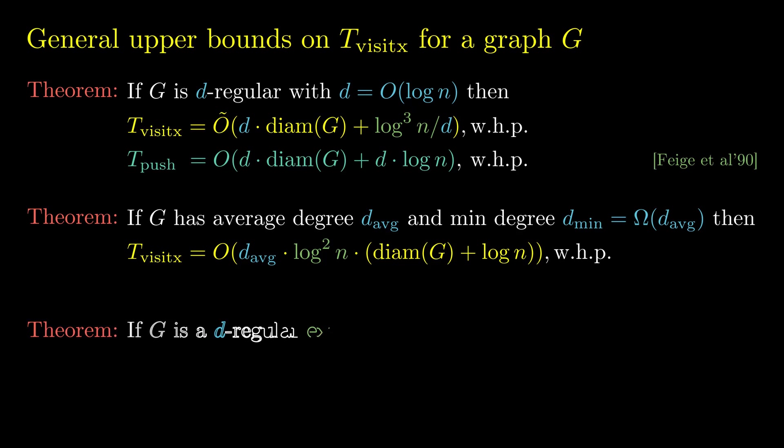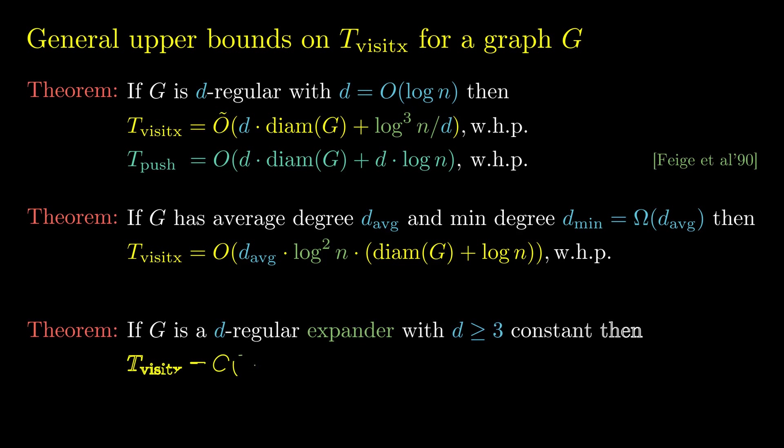This bound is unlikely to be tight, but it is interesting as there is no analogue of it in push or related processes. For example, in graphs where the average degree is constant, like in trees, visit exchange is guaranteed to be polylogarithmic times the diameter. This is not the case for push, for example in star graphs as we've already seen. Finally, we show that in regular expander graphs of constant degree, visit exchange runs in logarithmic time. This is also the case for other rumor-spreading protocols, including for larger values of d, though we currently lack a tight bound for superconstant d.